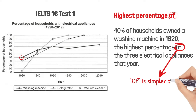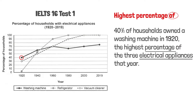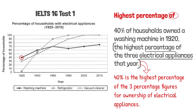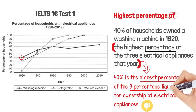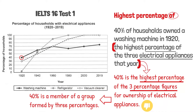You could use 'among,' but 'of' is simpler and more usual. You might think this is wrong — that you're comparing a percentage to electrical appliances. You could interpret it as: 40% is the highest percentage of the three percentage figures for ownership of electrical appliances. But of course no one would say that — it's wordy. We simply say 'the highest percentage of the three electrical appliances.' What is being compared are the three percentages: we are comparing the percentage of households owning a washing machine to the percentages for the other two appliances. 40% is a member of a group formed by three percentages, and being part of a group always uses 'of.'